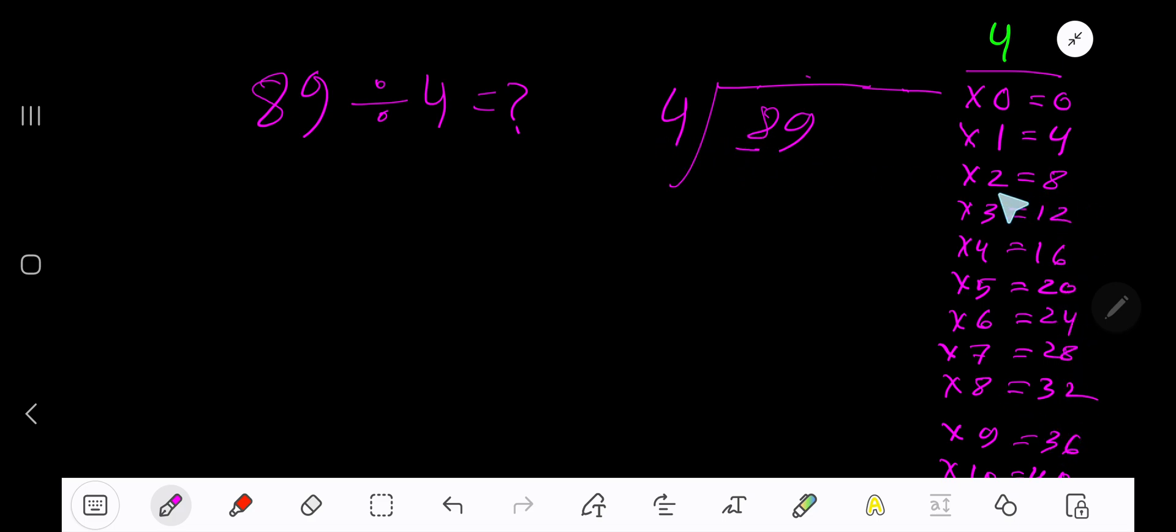4 goes into 8. How many times? 4 goes into 8, 2 times. 2 times 4, 8. Subtract 0.